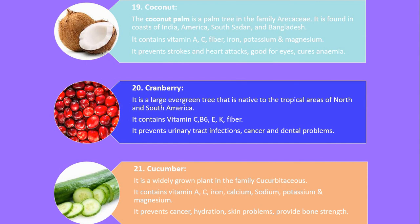Number 19. Coconut. The coconut palm is a palm tree in the family Arecaceae. It is found in coasts of India, America, South Sudan and Bangladesh. It contains vitamin A, C, fiber, iron, potassium and magnesium. It prevents strokes and heart attacks and cures anemia.